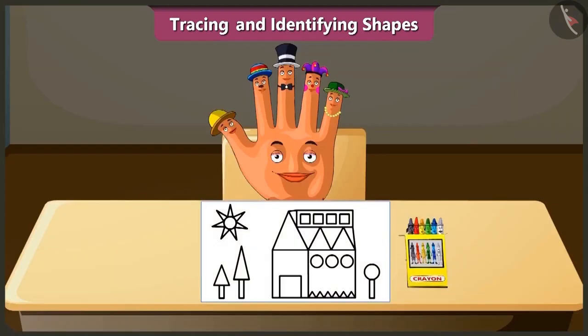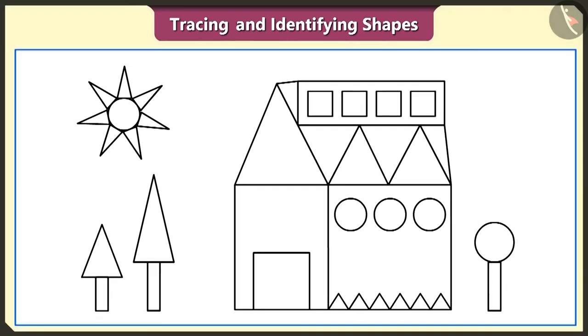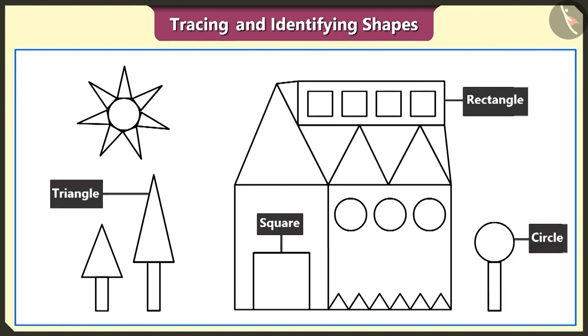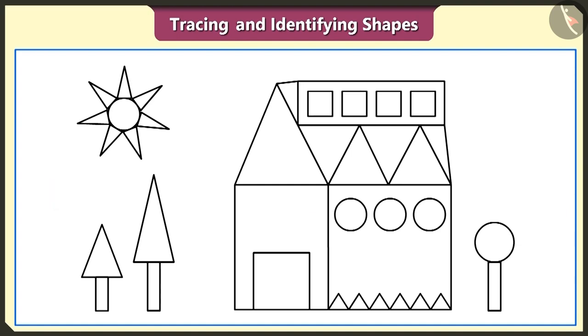Friends, let's see the second example now. Look, this is a figure made by tracing square, rectangle, circle and triangle shapes. Let's fill this figure with colors.